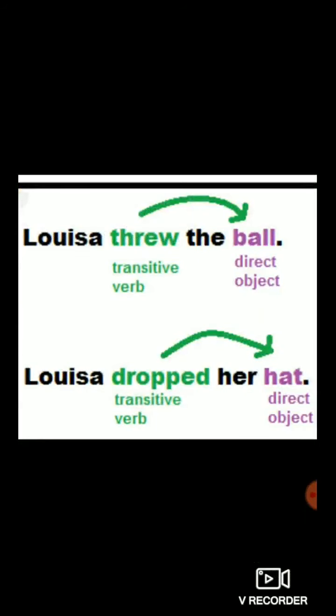Two more examples of transitive verb. First: 'Louisa threw the ball.' Threw is a verb because it is an action. After the verb, the ball is an object — it's a direct object. Ask the question: what did Louisa throw? The ball. You are getting an object as an answer, and after the verb threw there is an object, so threw is a transitive verb.